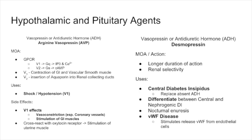Desmopressin is our next antidiuretic hormone analog. It has a longer duration of action and renal selectivity — selectivity for the V2 receptor. We use it for diabetes insipidus, replacing absent ADH in central DI. We also use it to differentiate between central and nephrogenic DI: in nephrogenic DI, vasopressin receptors on the kidneys don't respond to ADH. If we give desmopressin and they don't concentrate urine, the kidney isn't working; if they do concentrate urine, they lack ADH from the posterior pituitary.